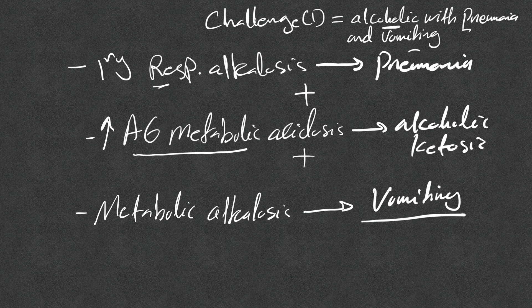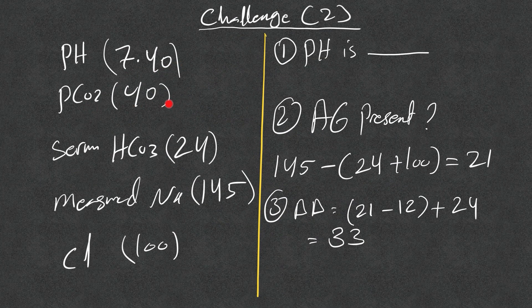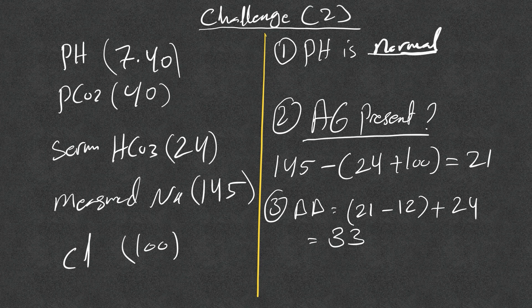Let's move to the next example: pH 7.4, pCO2 40 (normal), serum bicarb 24 (normal), measured sodium 145, chloride 100. Looking at these normal numbers, you might just stop there — that's why you need to analyze systematically. The pH is normal; we don't stop there. We calculate the anion gap, and the anion gap here is 21. There is a high anion gap present.